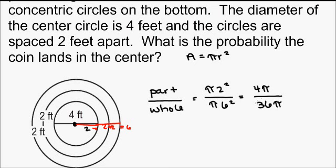Notice I haven't put anything in the calculator yet. So at this point, if you really wanted to, you could put this in the calculator. But let's just cancel this here. So the pi's cancel. We have 4 over 36, and that simplifies to 1 over 9. So the probability that this coin lands in the center is 1 over 9.